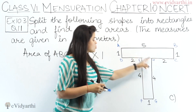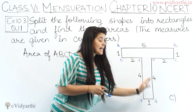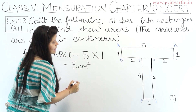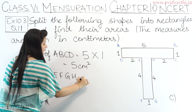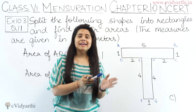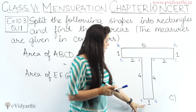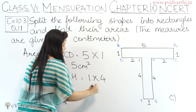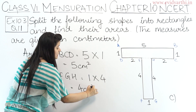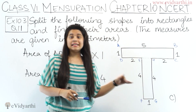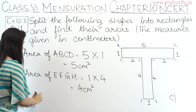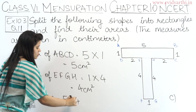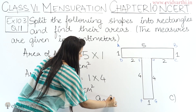Now for the other rectangle EFGH — area of rectangle EFGH = length into breadth. The length is 1 centimetre and breadth is 4 centimetres. So this is 1 into 4 = 4 centimetre square. The area of the complete figure = 5 + 4 = 9 centimetre square.